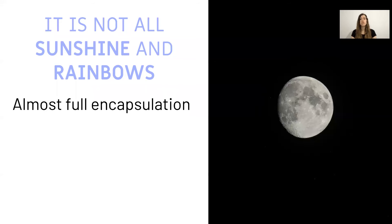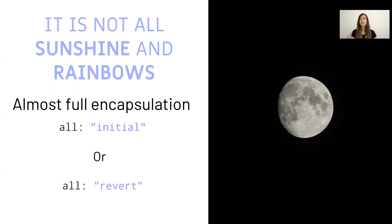Even though the Shadow DOM is shielded from outer styles, some styles like color, font, and line-height are still inherited in a Shadow DOM. To ensure full encapsulation, we will need to use 'all: initial' or preferably 'all: revert' because it has better browser support. The CSS 'all' property resets all properties to their initial or inherited values. We apply the 'all' property on the wrapper of the inner Shadow DOM.